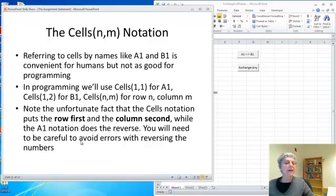Now I want to emphasize here about this cells notation. Names like A1 and B1 are very convenient for human beings. But when we're writing a program, it's actually more convenient to be able to use numbers for the row and the column. The only tricky thing is that when I write cells of one number and another number like N and M, the row number comes first and then the column number.